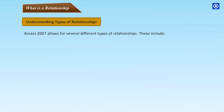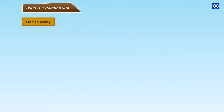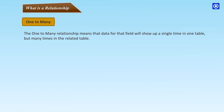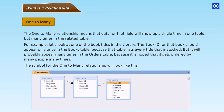Understanding Types of Relationships: Access 2007 allows for several types of relationships, including one-to-one, one-to-many, and many-to-many. The most frequently encountered type is the one-to-many relationship. This means data for a field will appear a single time in one table but many times in the related table. For example, a Book ID should appear only once in the Books table, but many times in the Orders table because it may be ordered by many people many times.